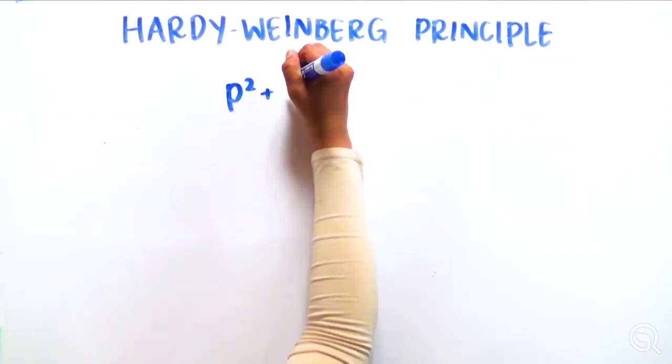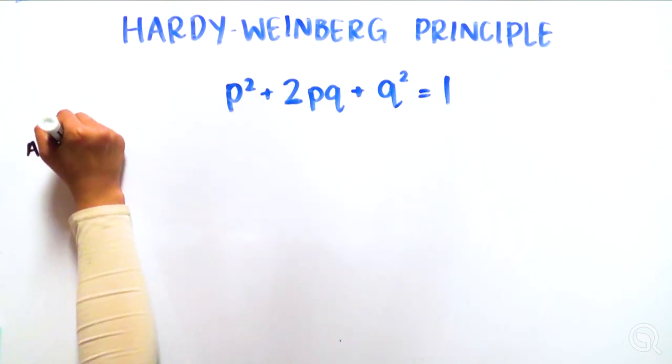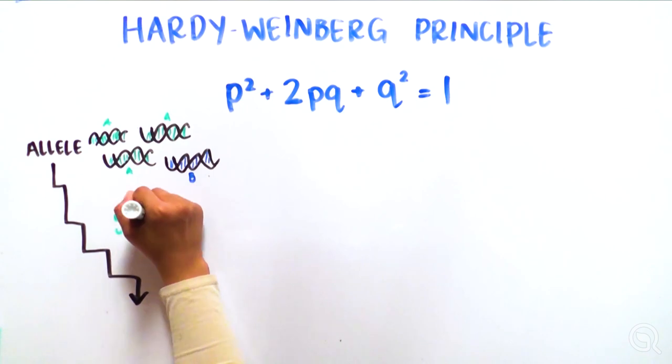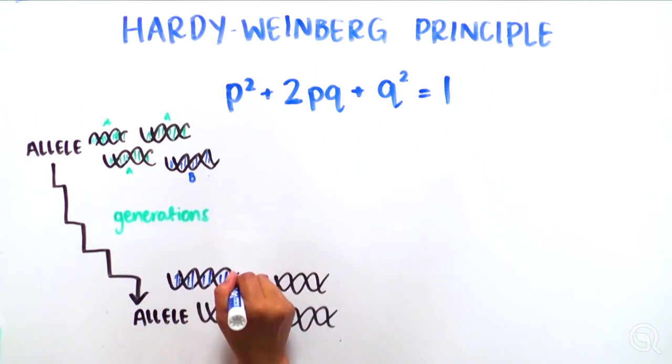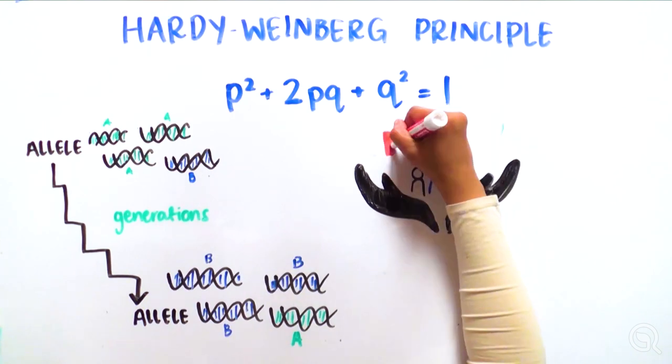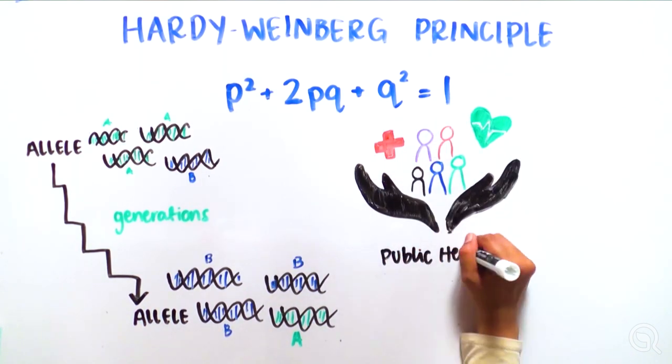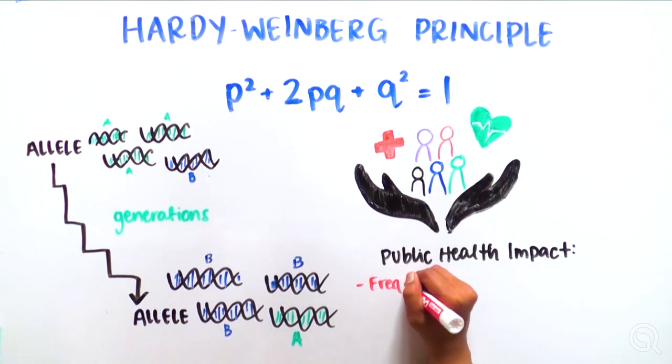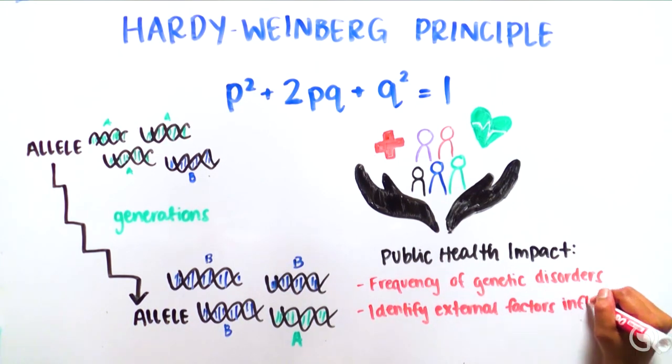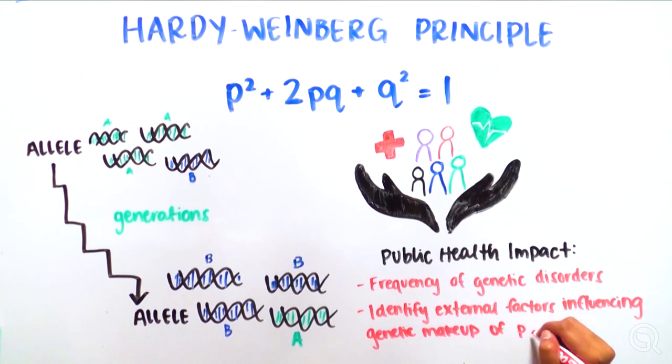The Hardy-Weinberg principle provides a framework to understand the evolutionary forces that influence how genes are passed down through generations. It allows geneticists to make important observations about the genetic makeup of a population that can guide public health decisions, such as estimating the frequency of genetic disorders, or identifying external factors that are influencing the genetic makeup of a population. It's amazing the power of one simple mathematical equation.